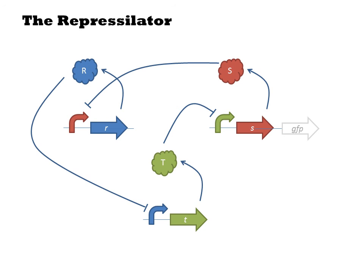If we expand that to three repressors in a cycle of repression, we can get oscillatory behavior wherein R, S, and T repressors take turns being the most concentrated transcription factor.